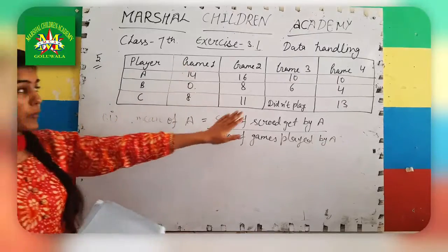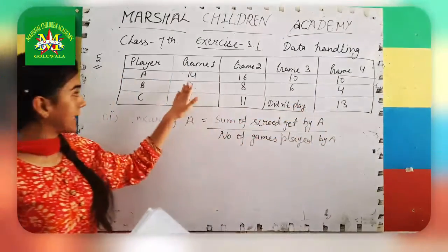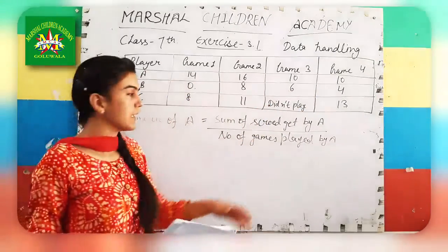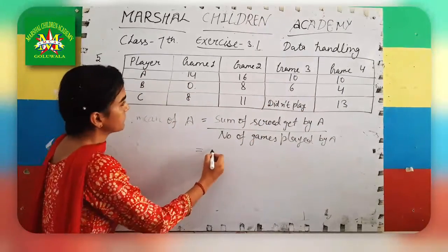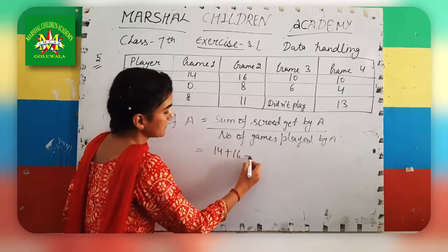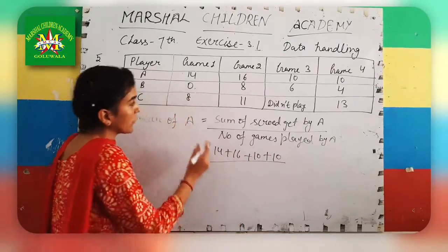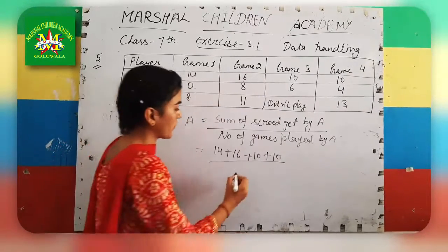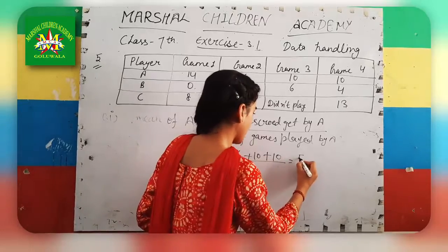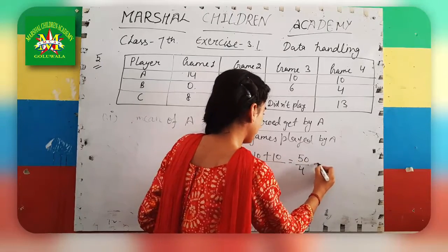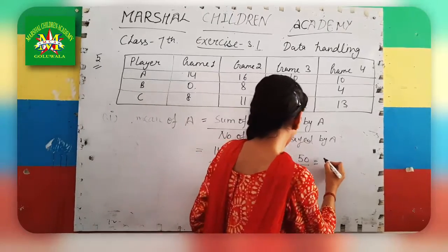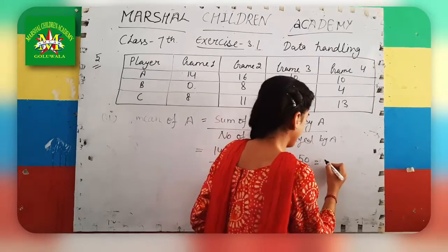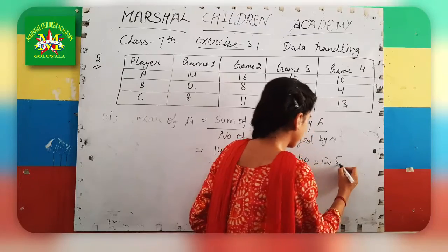A has played 4 games. The scores are 14 plus 16 plus 10 plus 10 plus 5, and the number of games played is 4, giving a total of 55. That gives a score of 13.75.